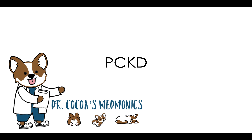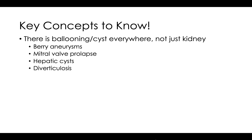Key concepts to know — the way I remember polycystic kidney disease: poly means many cysts, and we're obviously in the kidneys. But if you have multiple cysts in your kidney, think about that as ballooning, and you can have ballooning pretty much anywhere in this disease — not just in the kidney. Going from top down, starting with the brain: what could balloon? We could have an aneurysm — a berry aneurysm.